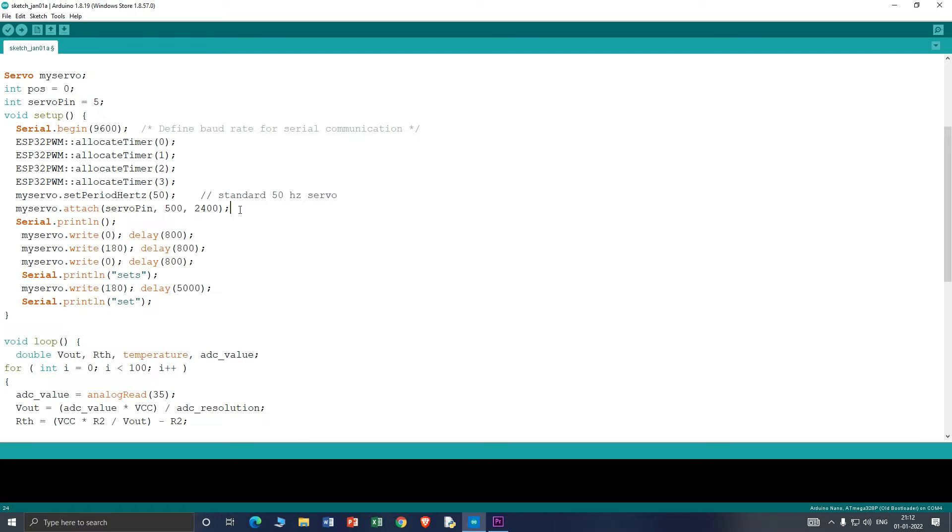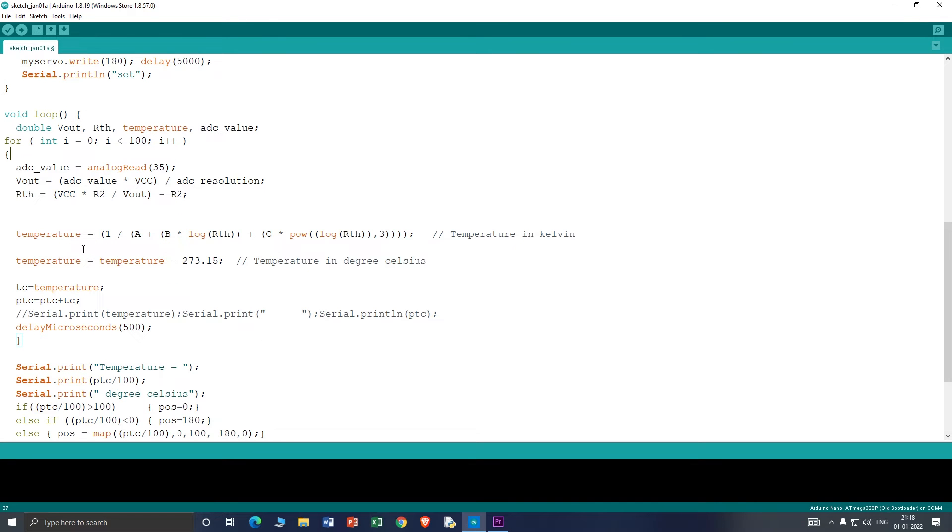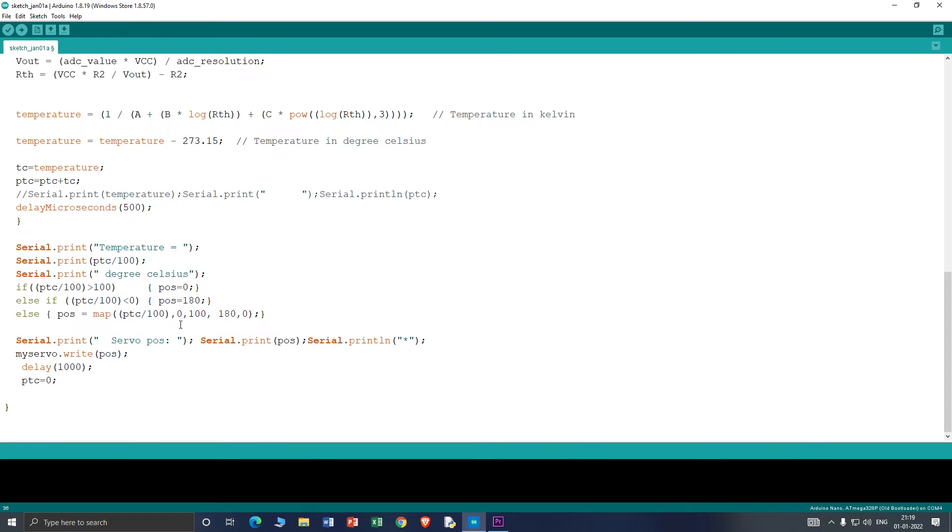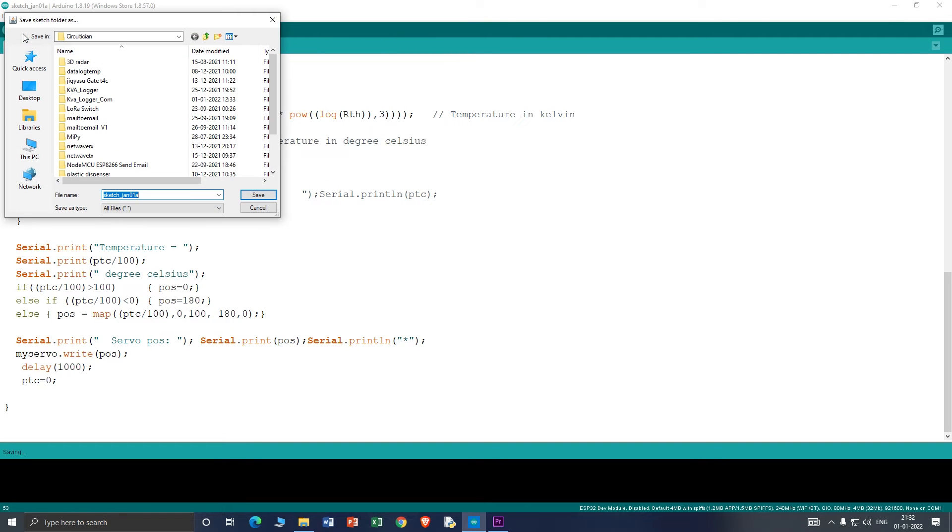Now in the loop part I am calculating the temperature value by taking 100 samples of the raw value. I map the 0 to 100 degree centigrade temperature value in between 0 to 180 degree servo angle. So that is it for the coding and I have already uploaded the code in the ESP32. Now let's see the demo.